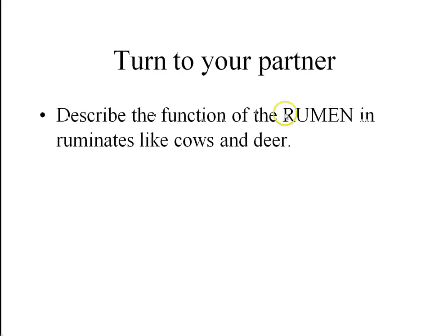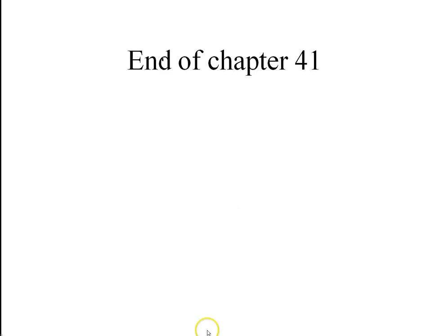Rumen — ruminants like cows and deer — extra stomach that stores bacteria, allowing them to break down their food more effectively. This ends your Chapter 41 notes.